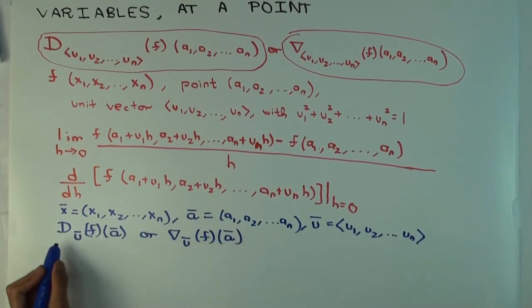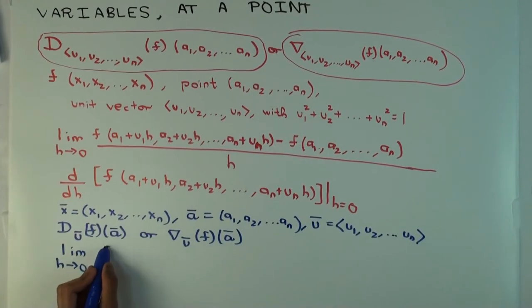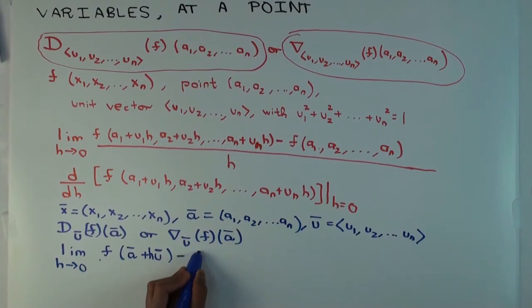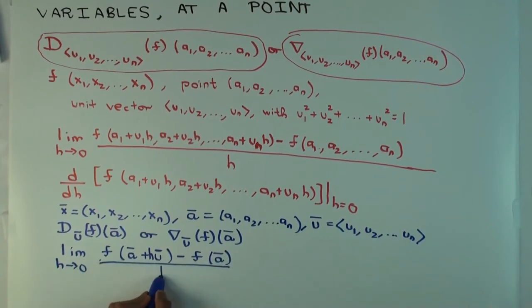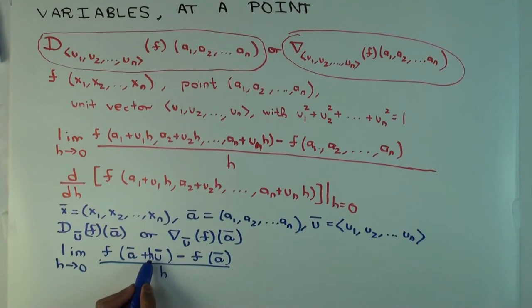F of ā plus hū minus f of ā over h. So what's happening? This is addition of vectors. This is a vector addition. And this hū is a scalar vector multiplication.